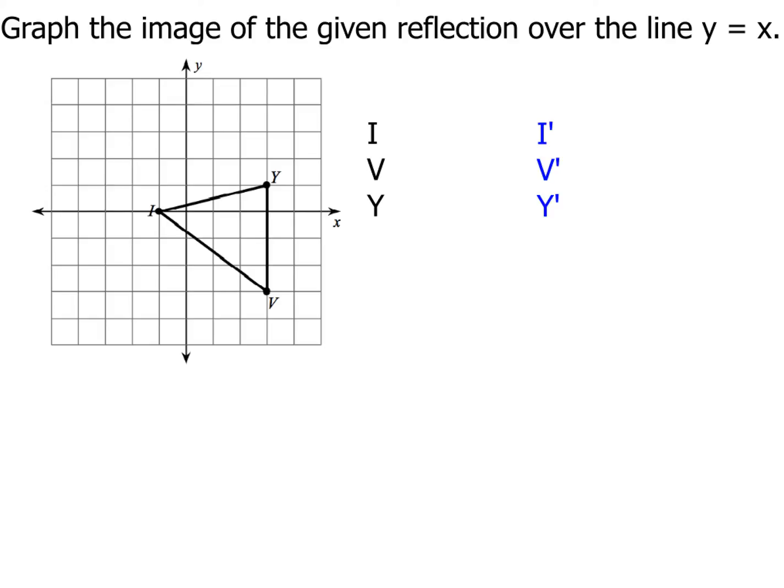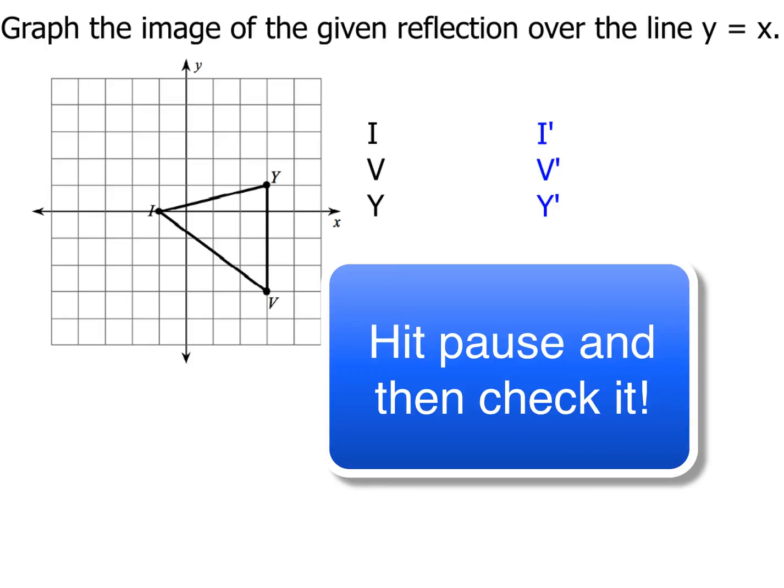Graph this image of the given reflection over the line y equals x. So again, list the coordinates for i, v, y. Then list the coordinates for i prime, v prime, and y prime. Graph them. And be sure you graph the line y equals x. When you're done, come on back and make sure you got this one right just as well.